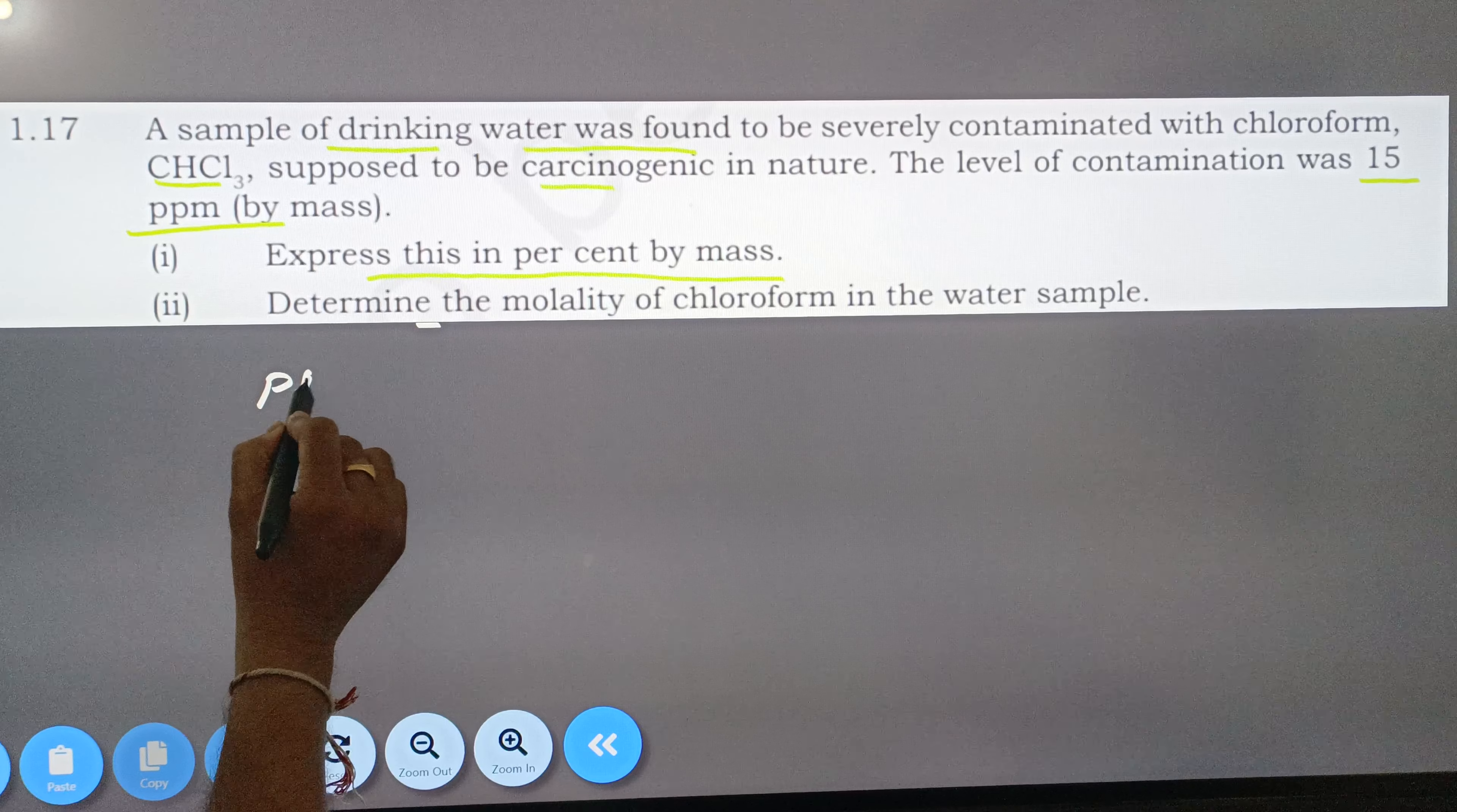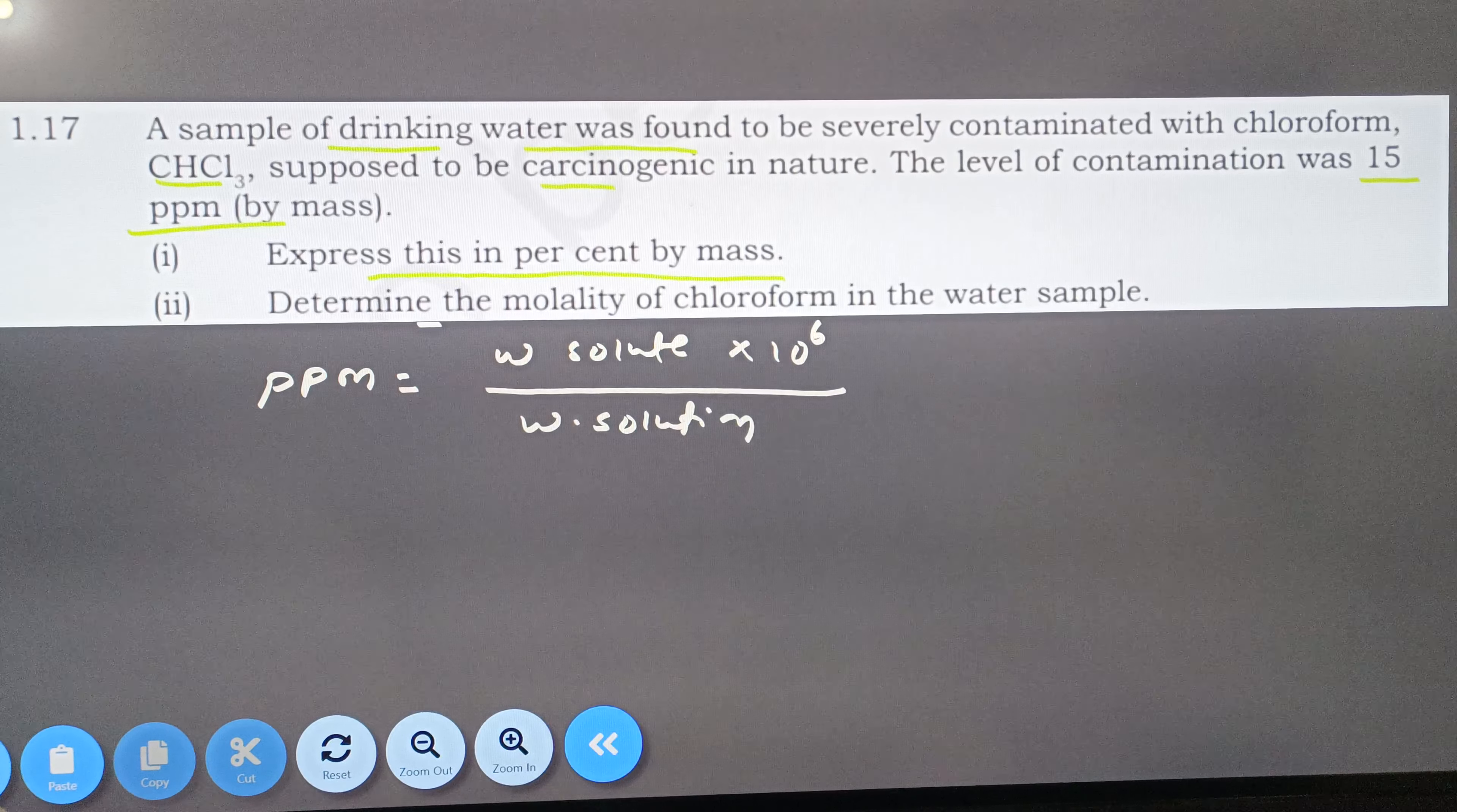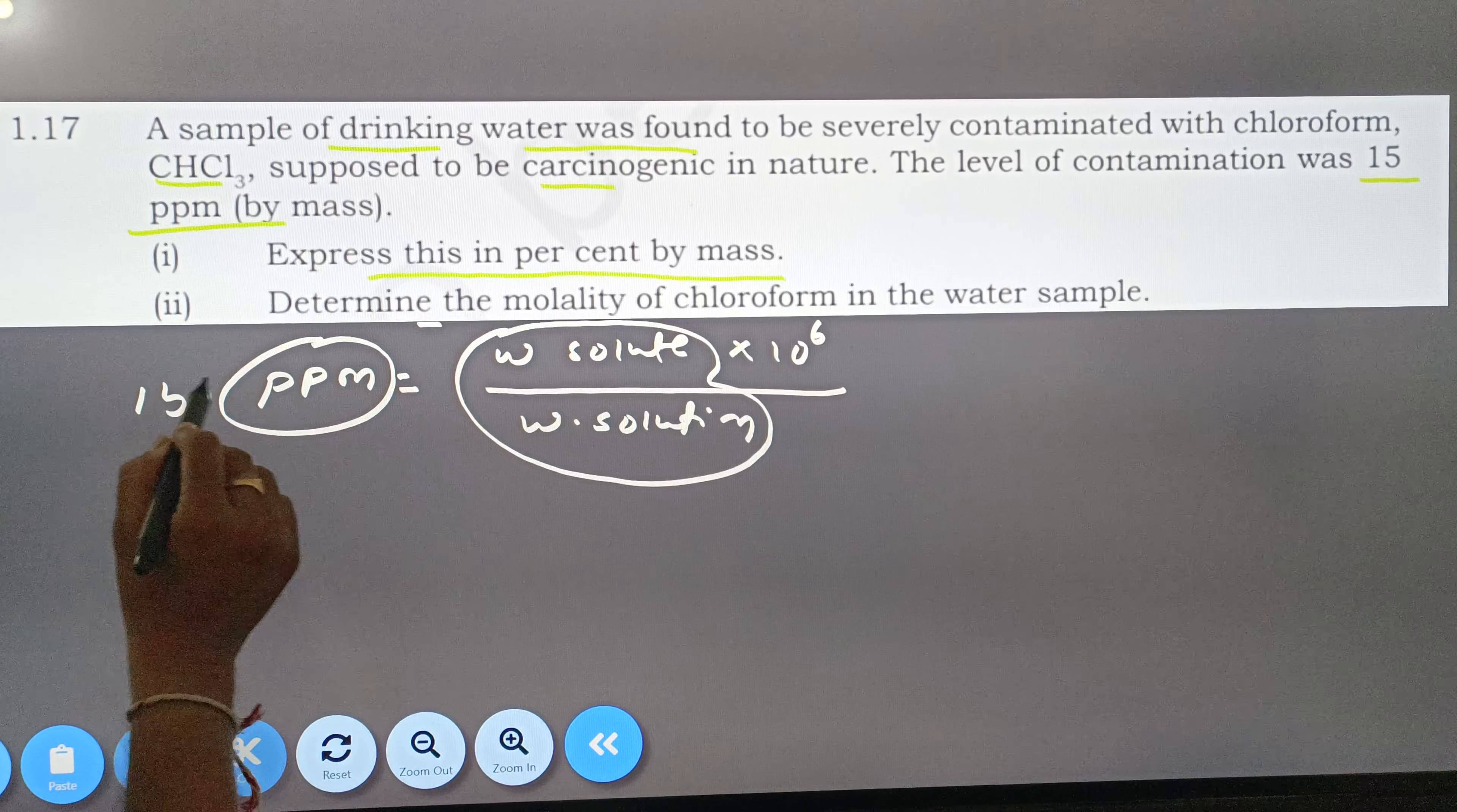First of all, ppm formula: weight of solute times 10 to the power 6 divided by weight of solution. Now we need W by W. This ppm is available. How much ppm is available? 15.